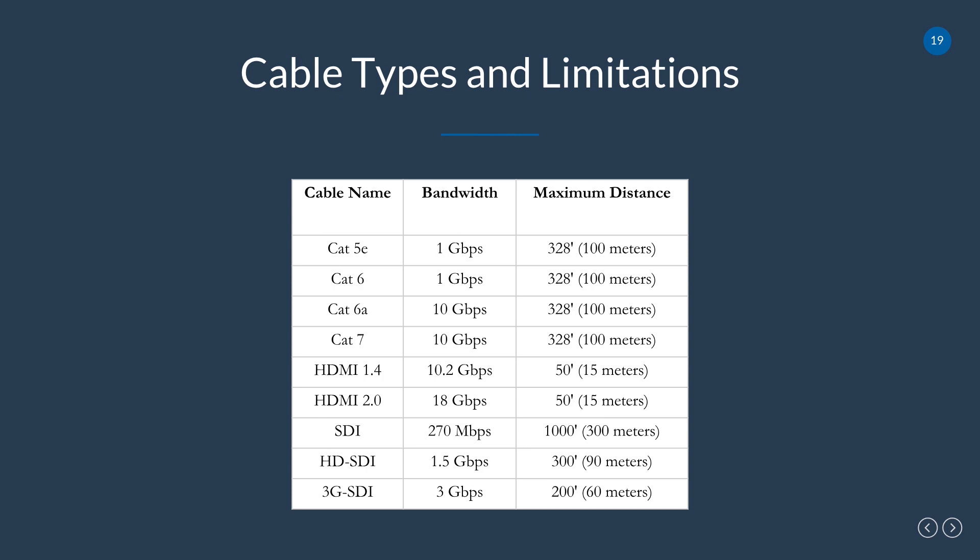Cat 5e can go 100 meters, which is 328 feet. Cat 6 is a higher quality cable with better connectors and shielding. Cat 6a makes a major jump to 10 gigabits per second — we'll talk about that in the IP networking chapter, but it's important because it could become a bottleneck on your network.